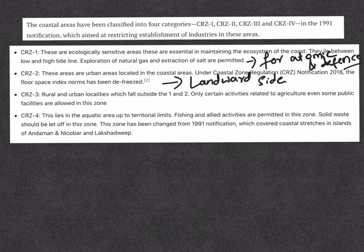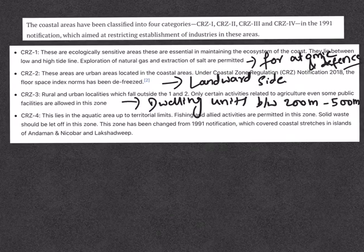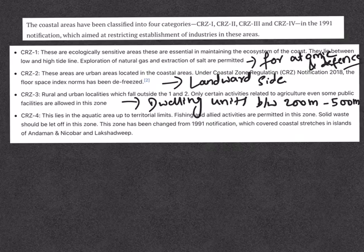The only exception in CRZ 3 is that construction of dwelling units between 200 to 500 meters from the coastline is allowed. Category 4 includes the water area covered between the low tide line and 12 nautical miles seaward. Except for fishing and related activities, all actions affecting the sea and tidal water will be regulated. A separate draft island protection zone notification has been issued for the protection of the islands of Andaman and Nicobar and Lakshadweep under the Environment Protection Act 1986.